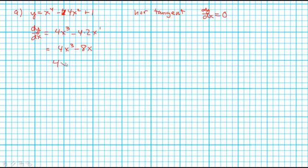So when is 4x cubed minus 8x equal to 0? Well to solve this I think I will factor out a 4 and an x out of these two terms. And I am left with x squared minus 2.